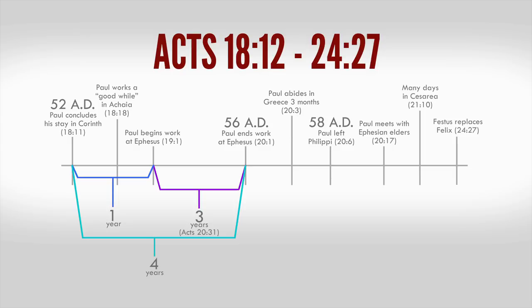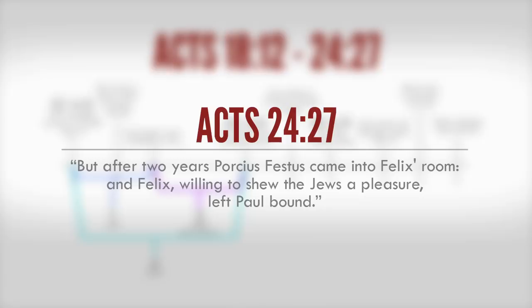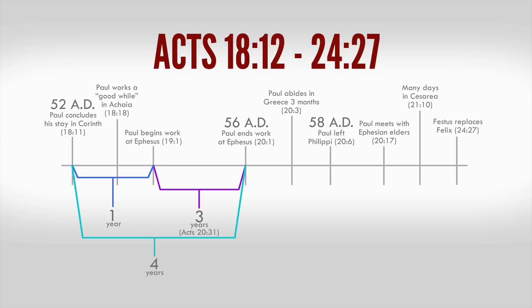Paul will be arrested and is said to have reasoned with Felix for two years, Acts 24:27. This change of office — referring to Felix being succeeded — is recorded by Josephus as having occurred around 61 AD. This means our fifth block of time covered a period of around nine years.